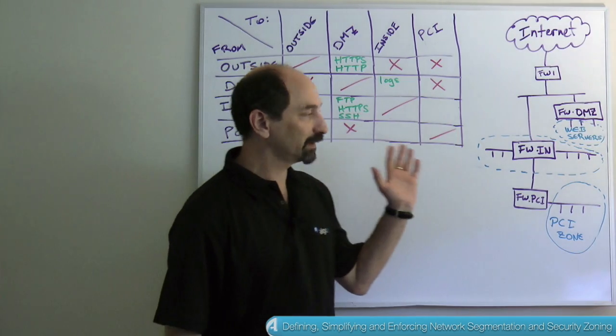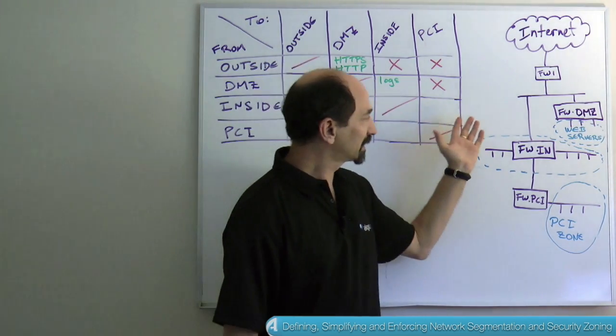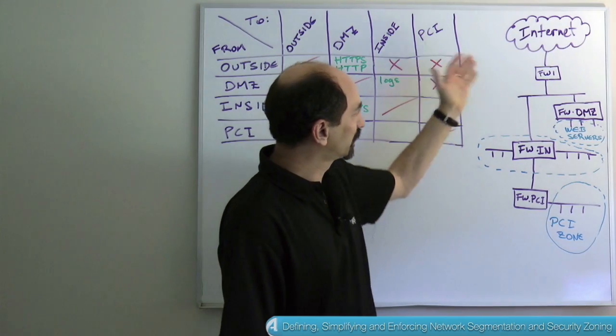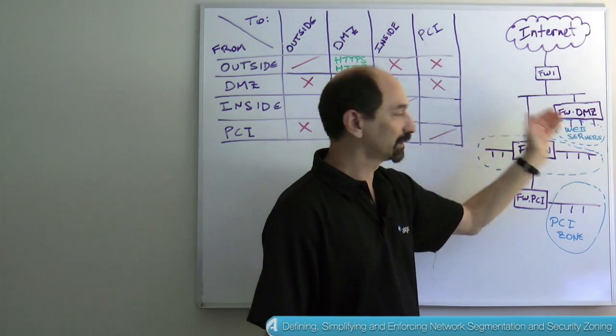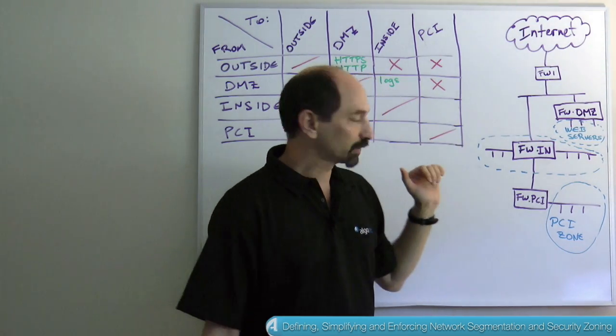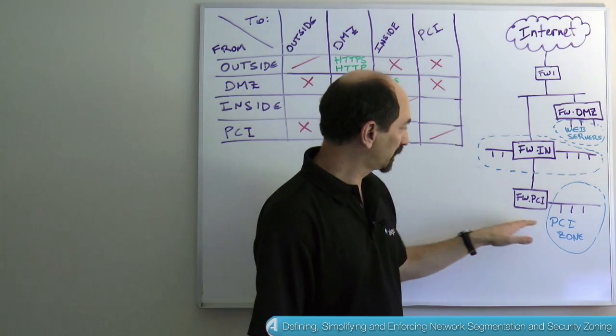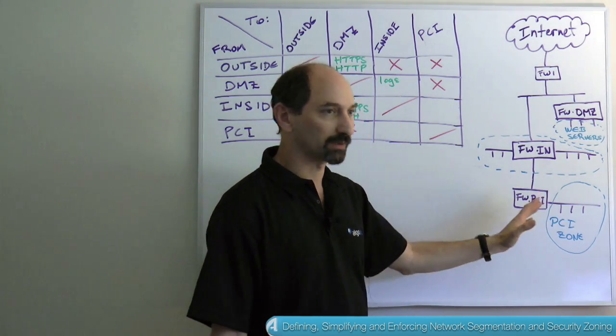So what are we talking about? In your typical organization you have multiple firewalls. Here we have an example of a rather simple organization with four firewalls: one facing the internet, one protecting the web servers area, one protecting the main internal network, and one protecting the PCI zone where servers that carry credit card information are located.